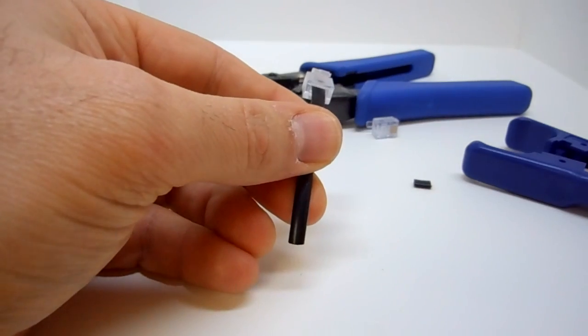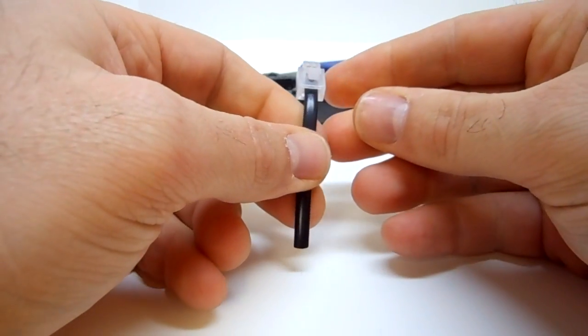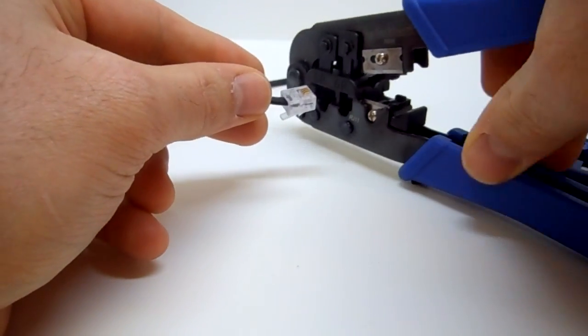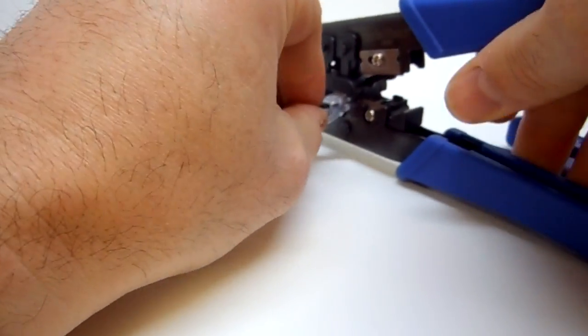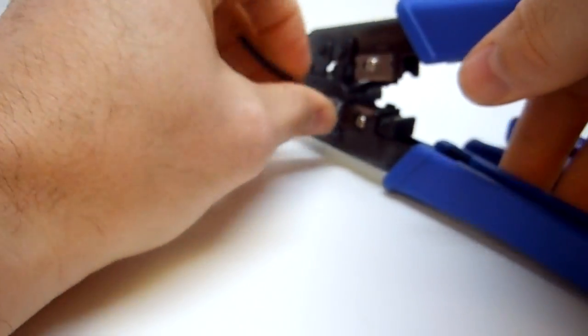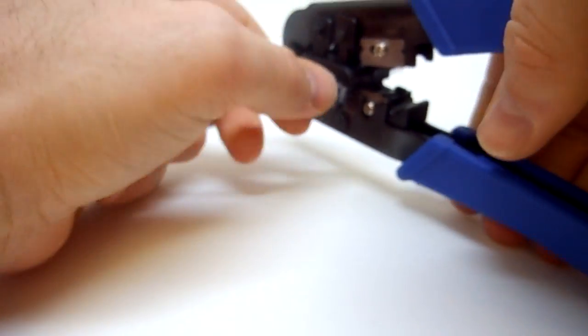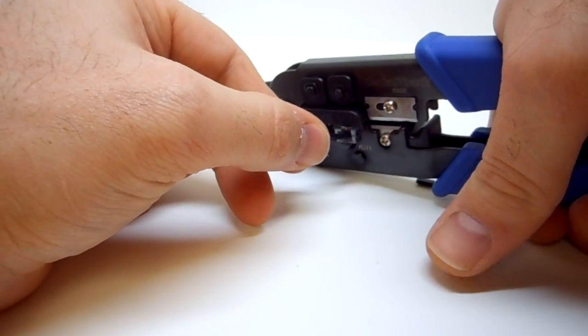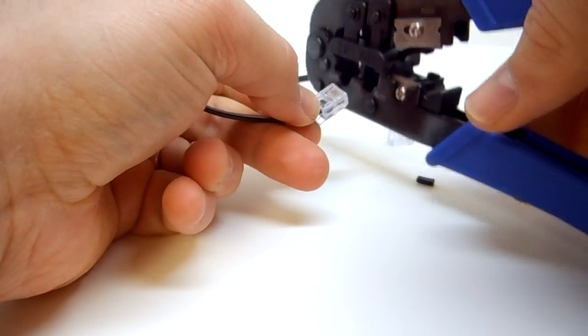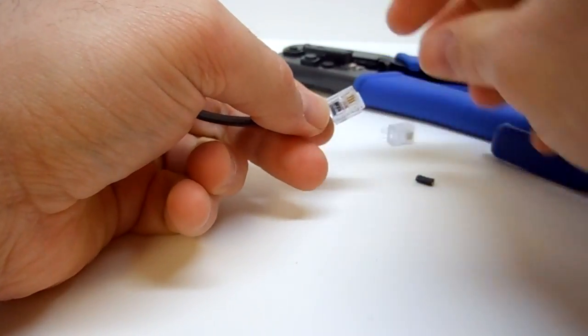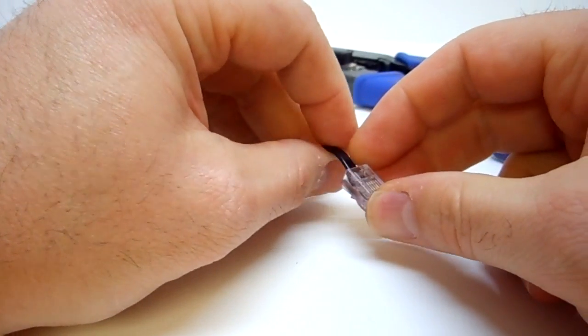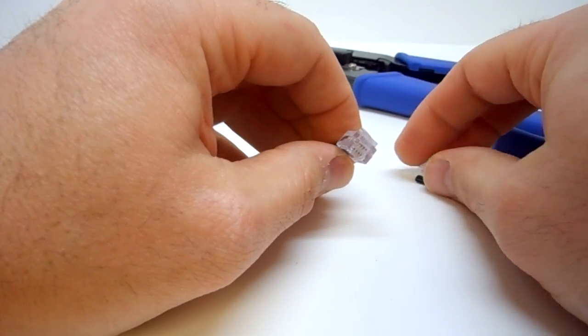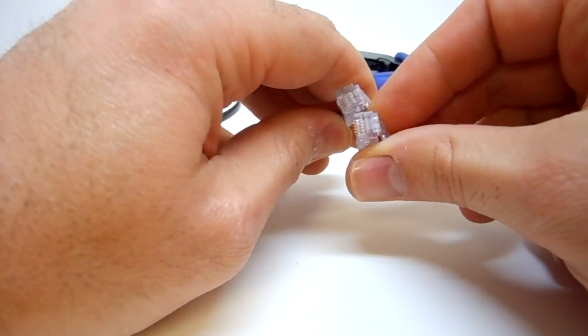Now that we have one end on, we simply insert it into our crimping tool. You'll hear it click or feel it snap in, and then we squeeze. Then we push on the tab and remove it. If you look inside here, you'll see all of the contacts are pushed down, not sticking up like they do when the connector is not crimped.